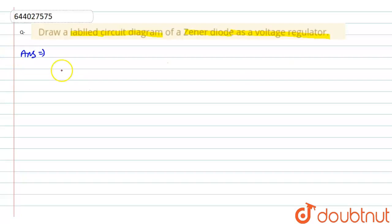now I will draw the diagram. So, this will look like this. As you can see, I am drawing Zener diode as a voltage regulator.